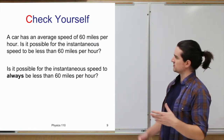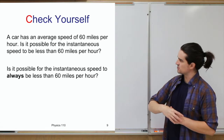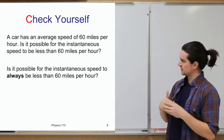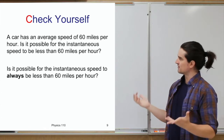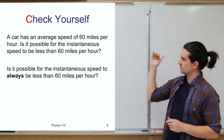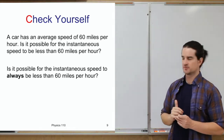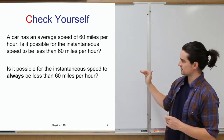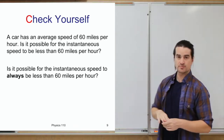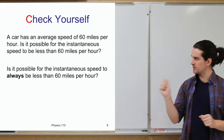Another question: if your car has an average speed of 60 miles per hour, is it possible for the instantaneous speed to be less than 60 miles per hour? And beyond that, is it possible for the instantaneous speed to always be less than 60 miles per hour? Go ahead and pause and think about it — just a couple words, yes or no.